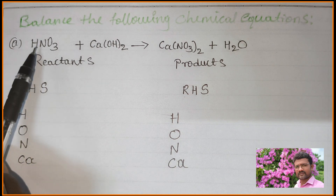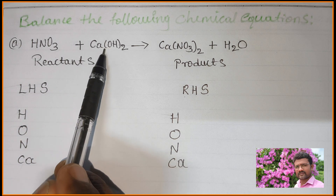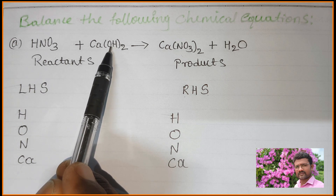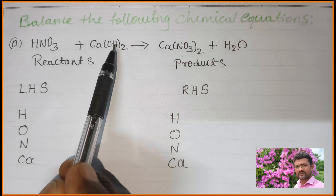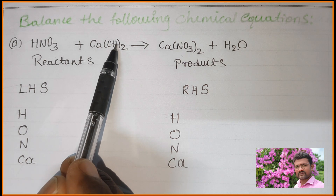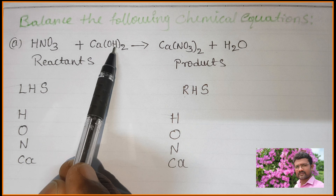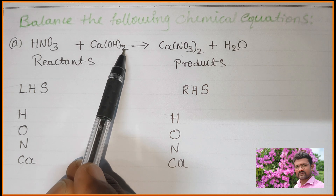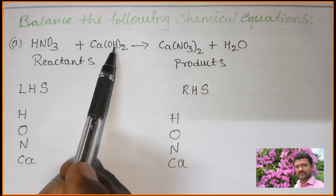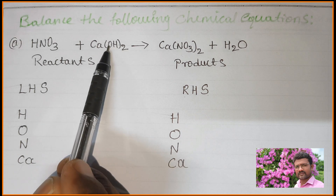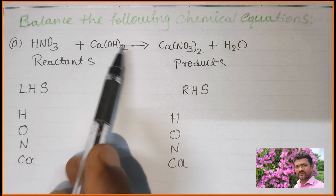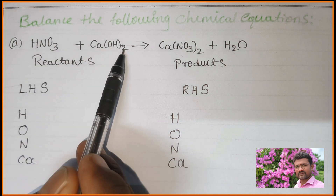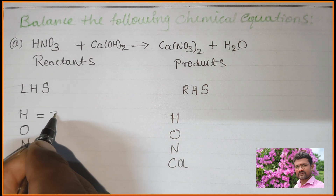Now count the number of hydrogen atoms on the reactant side. Here there is 1 hydrogen in HNO3. In Ca(OH)2, the bracket with 2 outside means we multiply: 2 into O gives 2 oxygen, and 2 into H gives 2 hydrogen. So here 1 hydrogen and here 2 hydrogen — total LHS side: 3 hydrogen atoms.